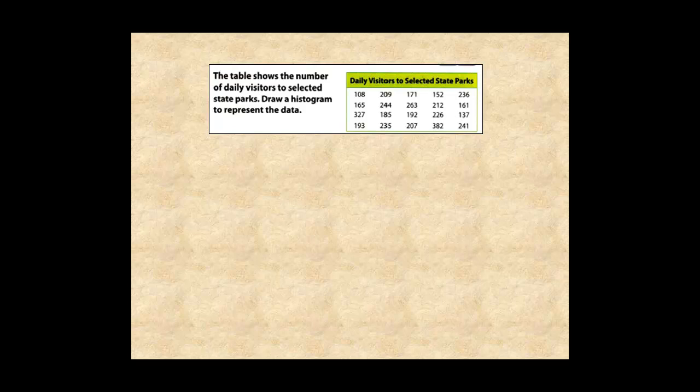Here's how to draw a histogram step-by-step. This table shows the number of daily visitors to selected state parks. The first step is to scan the data looking for the smallest and largest data values, which are 108 to 382.